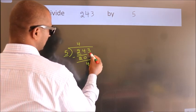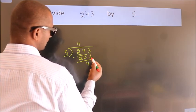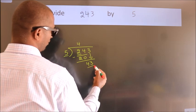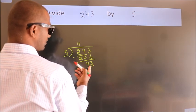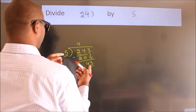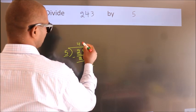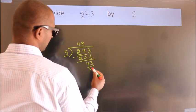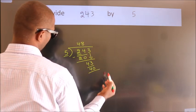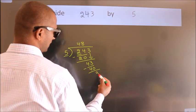After this, bring down the beside number. So 3 down. So 43. A number close to 43 in the 5 table is 5 times 8 is 40. Now we subtract. We get 3.